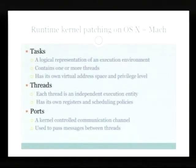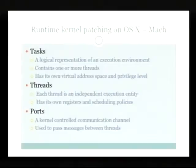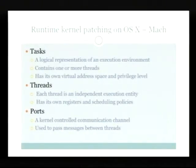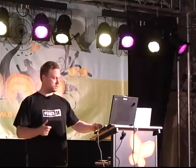We use the ports to communicate between different parts of the operating system. These ports are used in inter-process communication between different parts of the OS and also between different processes. In order to communicate with the kernel, we need to access its port, and the kernel always has zero as its port.